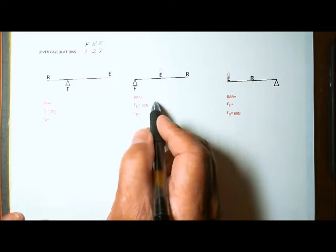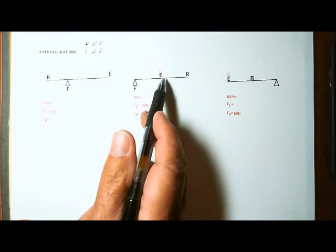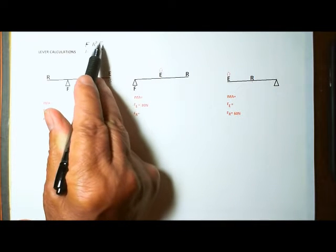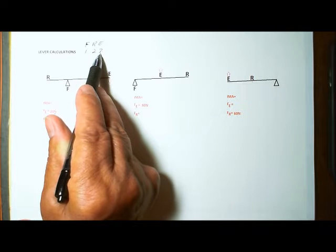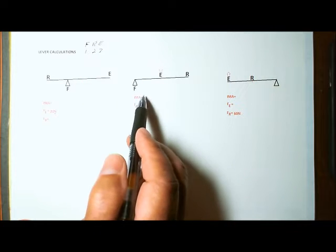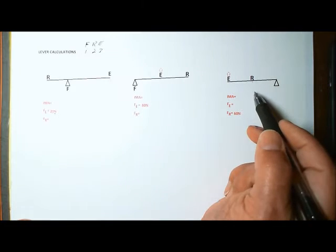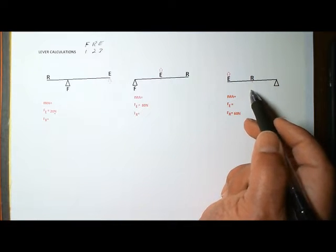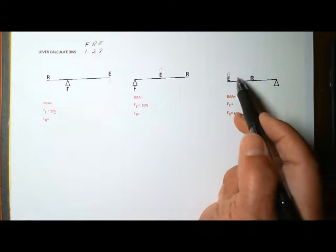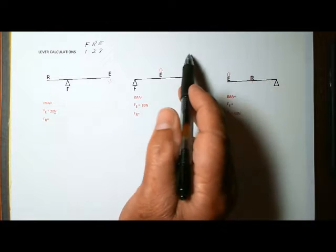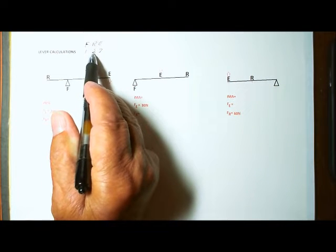On the middle lever, we can see that the effort is between the fulcrum and the resistance, which makes it a third class lever. The last lever on the end has the resistance between the fulcrum and the effort, and that makes it a second class lever.